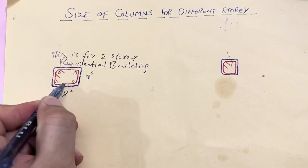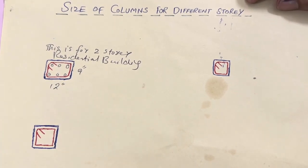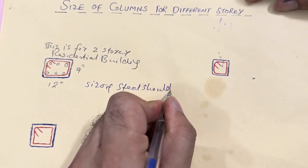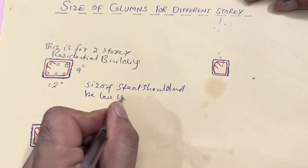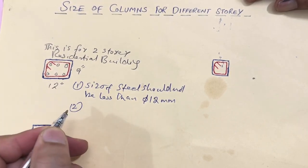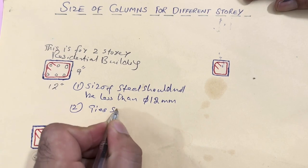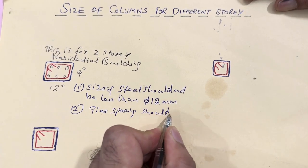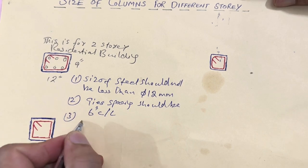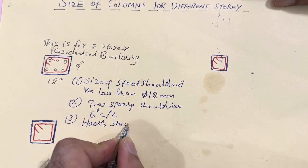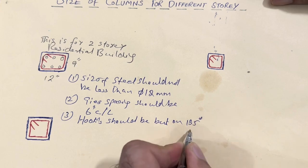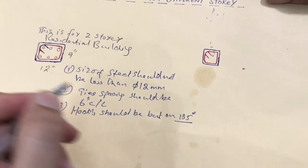1, 2, 3, 4, 5, 6 numbers. The size of steel should not be less than 12 mm. You can see the first and second ones. Ties spacing should be 6 inches center to center — these are ties. And hooks should be bent at 135 degrees, as you can see here.